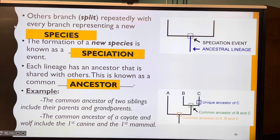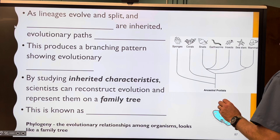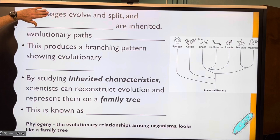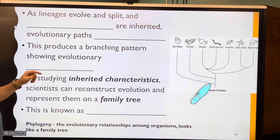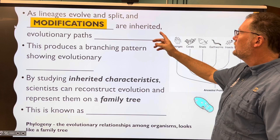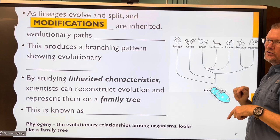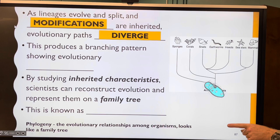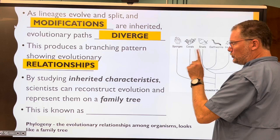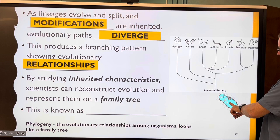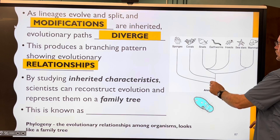As lineages evolve and split, modifications are inherited — adaptations — by the next generation. Evolutionary paths diverge; this is divergent evolution. This process produces a branching pattern showing evolutionary relationships. We can see, for example, that ancestral protists gave way to all of these creatures: sponges were first, then corals branched off, then something else branched off, giving way to snails, earthworms, insects, sea stars, and eventually mammals.